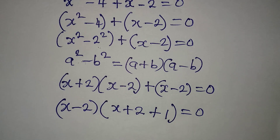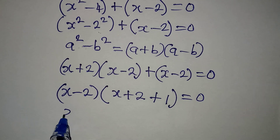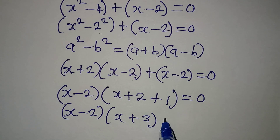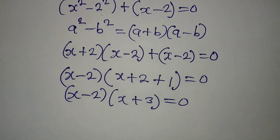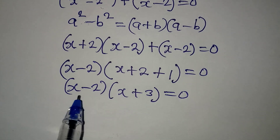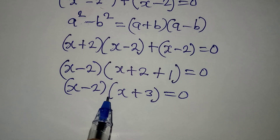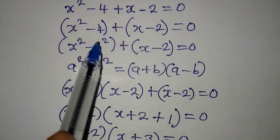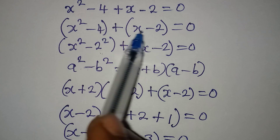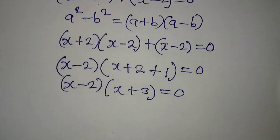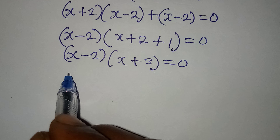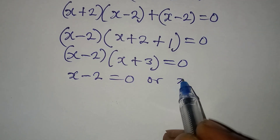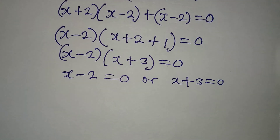Everything is equal to zero. This means that x minus 2 times x plus 3 equals zero. Now we are having multiplication between them, so we can now equate either of them to zero. This means x minus 2 is equal to zero, or x plus 3 is equal to zero.